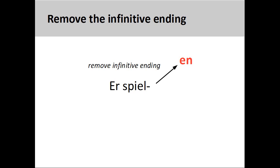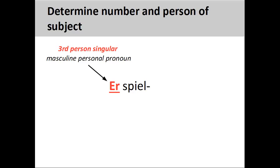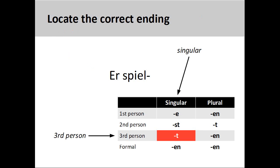To conjugate a verb, you first remove its infinitive ending. The next step is to determine both the number and person for the subject of the verb. Here, the subject is the third person singular masculine personal pronoun 'er', 'he'. We then need to find the correct third person singular verb ending on the chart. Here, the correct ending '-t' is marked in red.